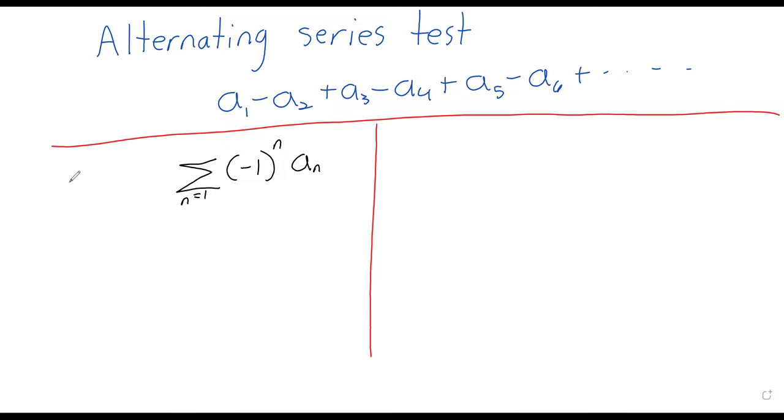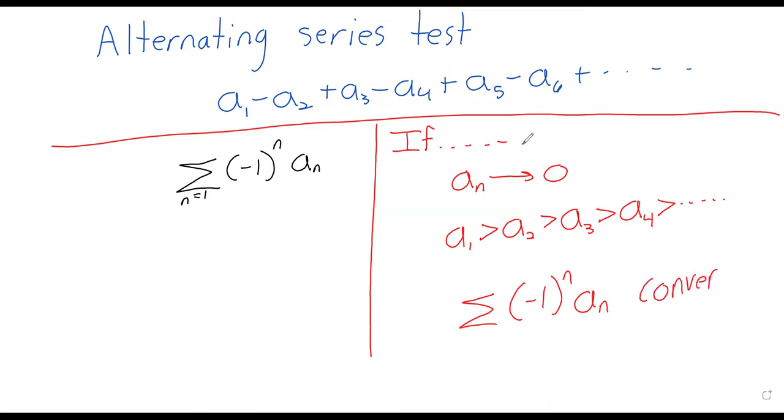So if these terms are going to 0, and these terms, in fact, are going to 0 monotonically, is the fancy word, but if every term is less than the term before it, then this series converges.